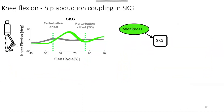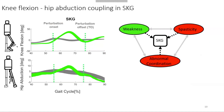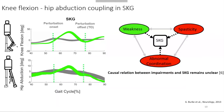Going back to the observed knee flexion hip abduction coupling in stiff knee gait, the device was able to provide enough knee flexion and increased toe clearance, addressing hamstring muscle weakness and reduced knee flexion velocity. However, the resulting unexpected increase in hip abduction indicates it made the other impairments and their interactions worse. To restore healthy walking, we need to understand the causal relationships between these impairments in stiff knee gait and their interactions with one another. This was the main motivation for the study I will be presenting in this webinar.